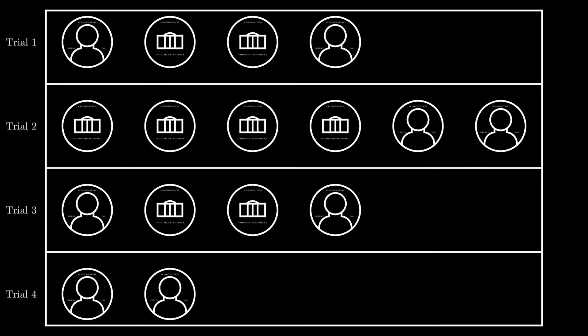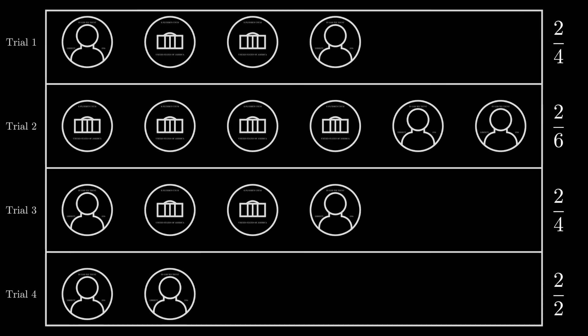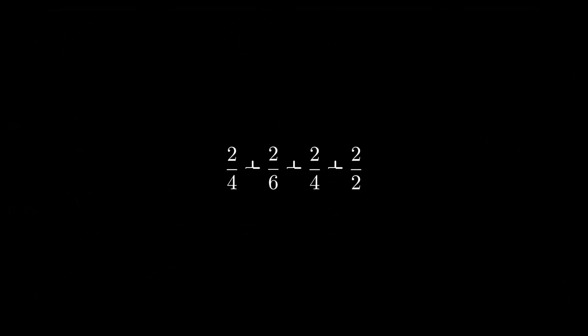Let's suppose that we have done at least four trials. The trials I'm putting up on the screen right now is actual data that we came up with by flipping a coin. Notice that in the first trial, exactly two of the four flips were heads, and in the second trial, exactly two of the six flips are heads. You can see there's a ratio of heads in each trial. The question I'll ask is: what on average is the proportion of heads in each trial? We're going to add all these proportions together and divide by the number of trials — in this case, four.